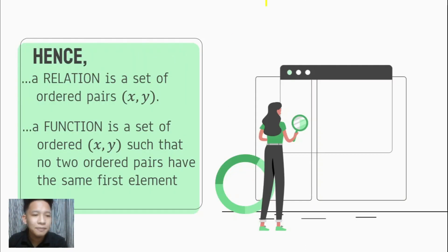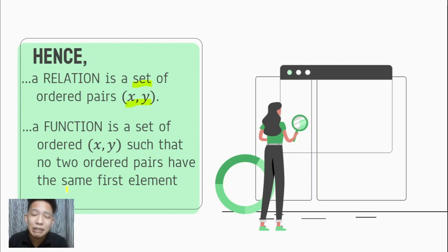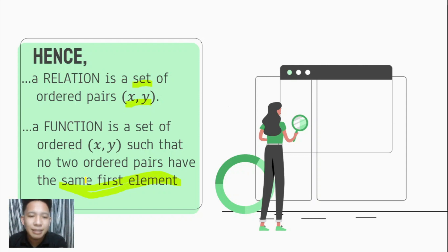A relation is just a set of ordered pairs, where a relation is a rule that relates domain to that of the range — meaning we have an ordered pair, X and Y — wherein there is no restriction. While a function is a set of ordered pairs X and Y such that no two ordered pairs have the same first element. It only means the domain values do not repeat. No two ordered pairs have the same first element — the domain must not repeat.